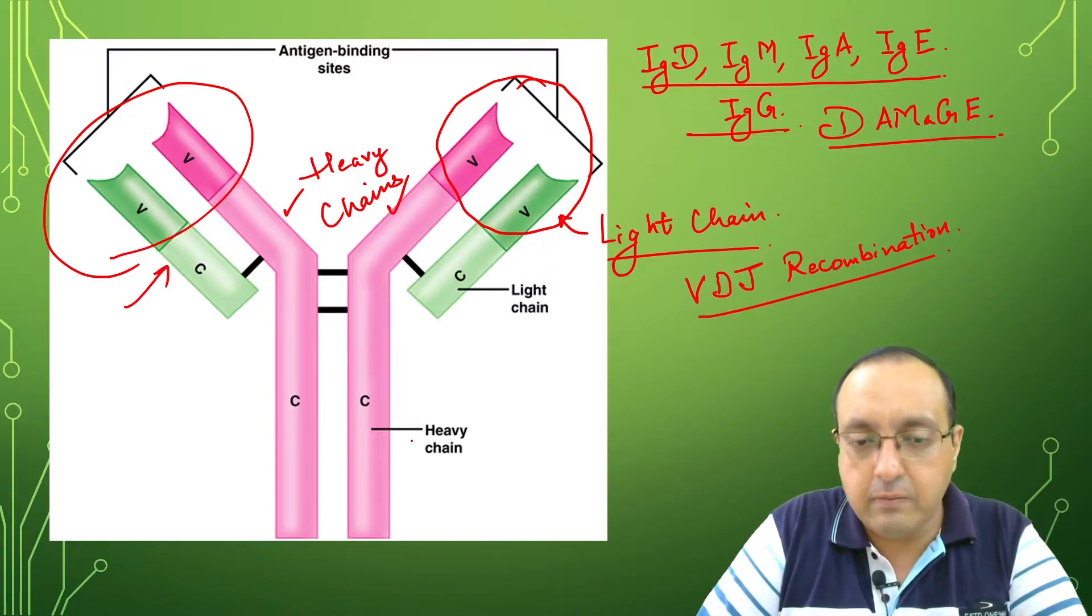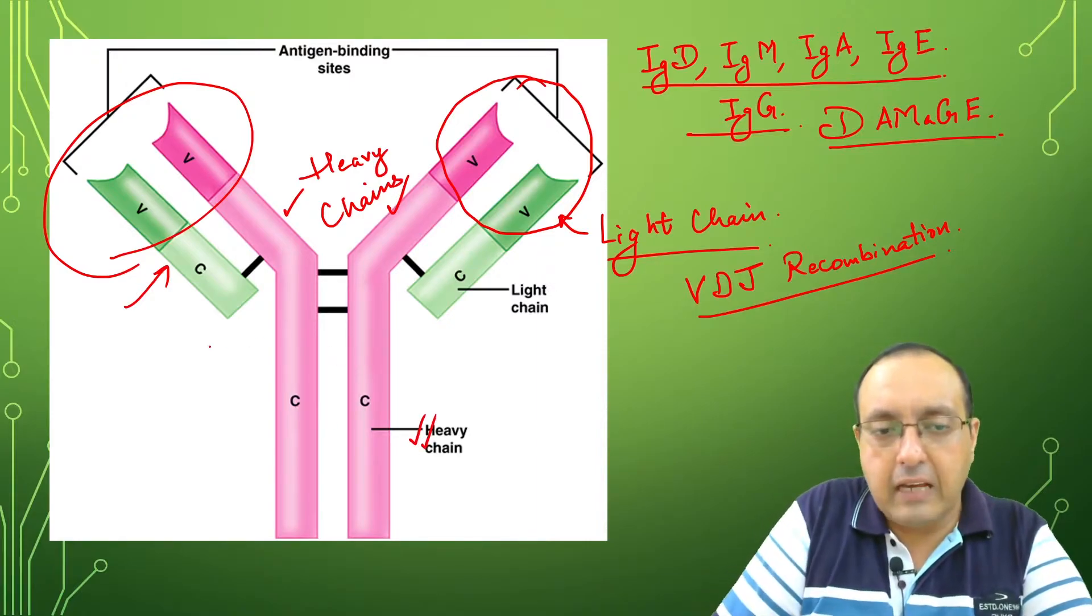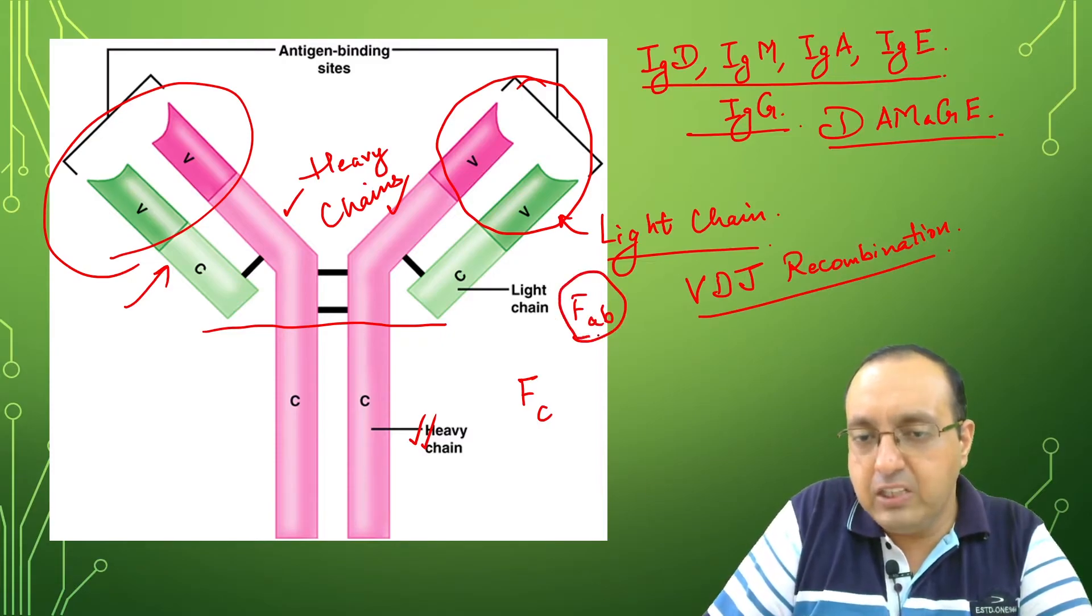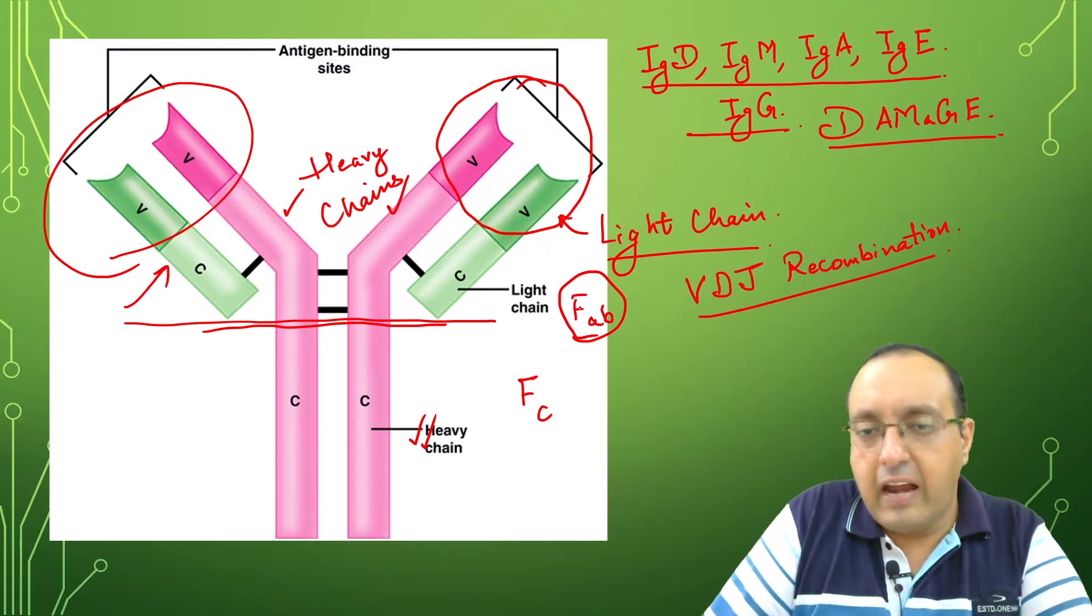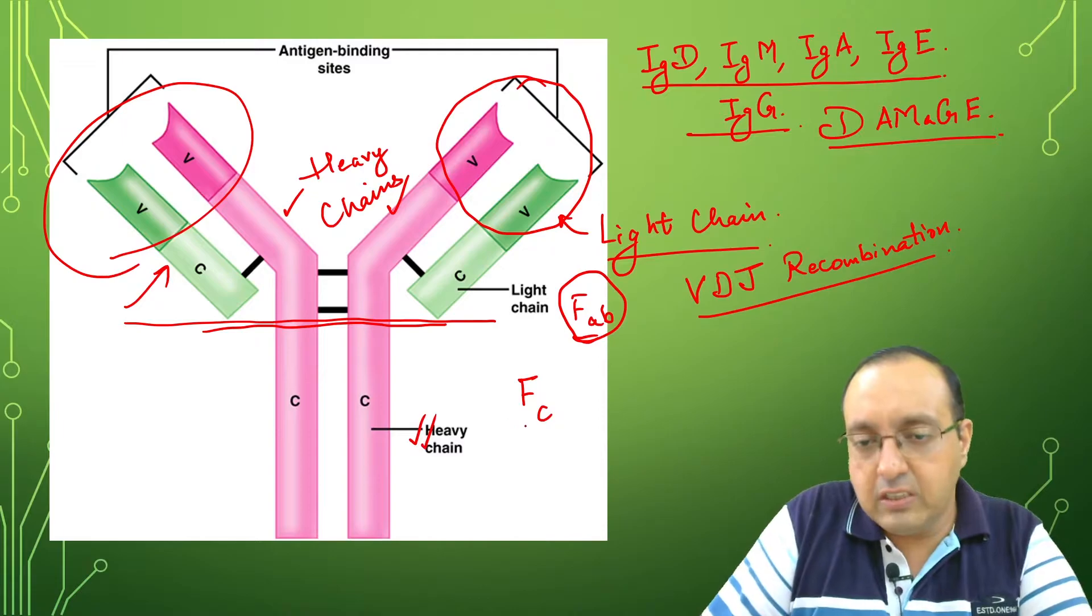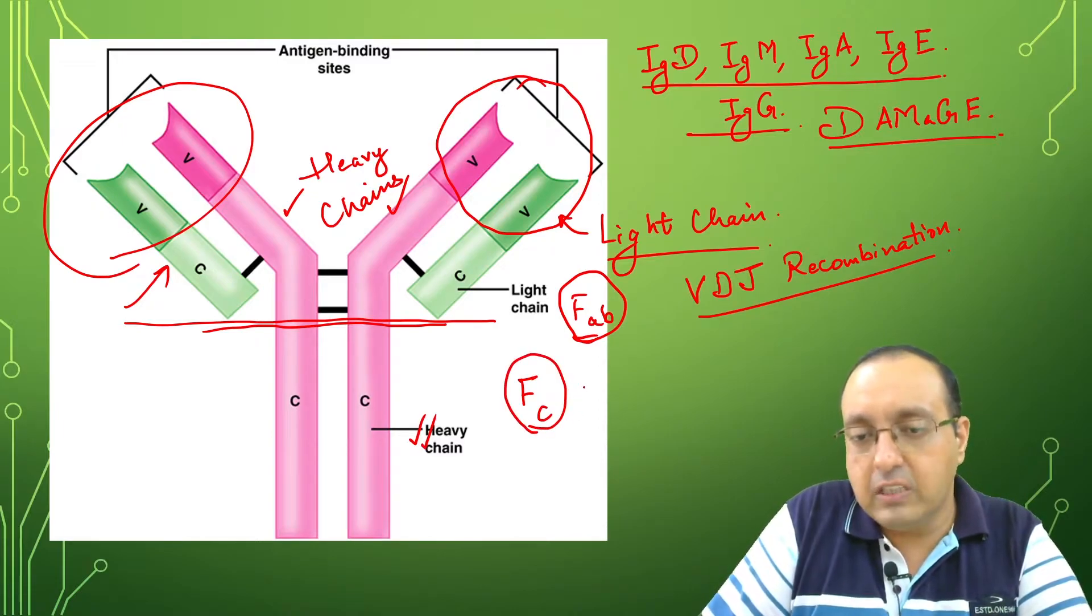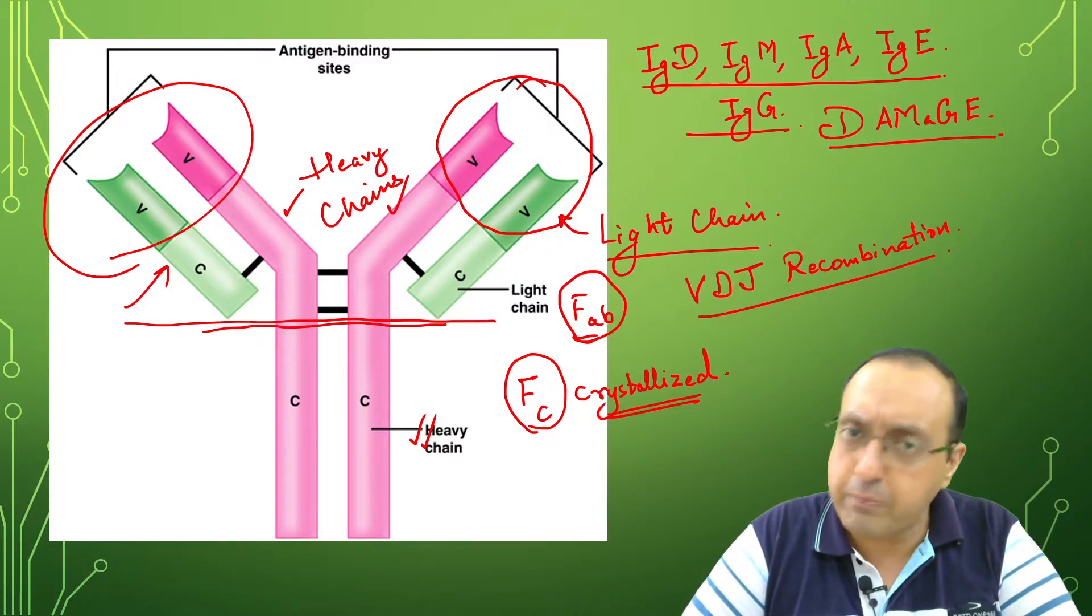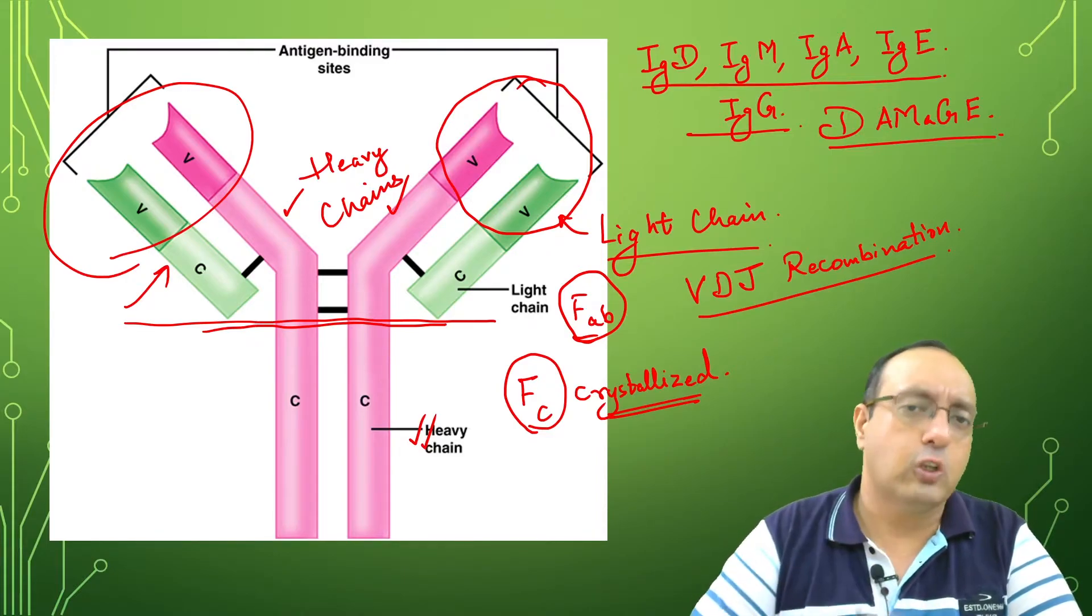Here we have the heavy chain. In literature, you'll find references to the FC region and FAB region. FAB region is the antibody binding fragment, while the lower region is called the FC or crystallized fragment. This refers to earlier studies of antibody structure where they were digested with enzymes like papain and pepsin, which led to isolation of these two forms.